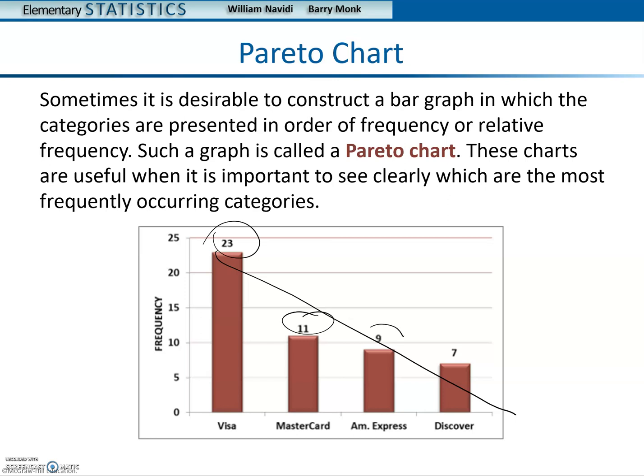You got the 23 height, 11, 9, and 7. So they're in order of most to least.